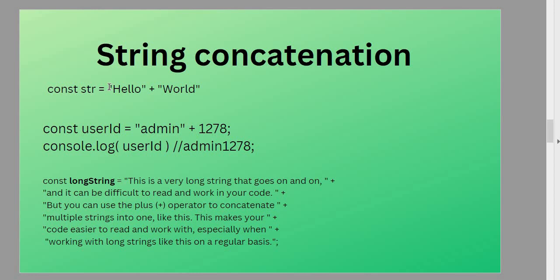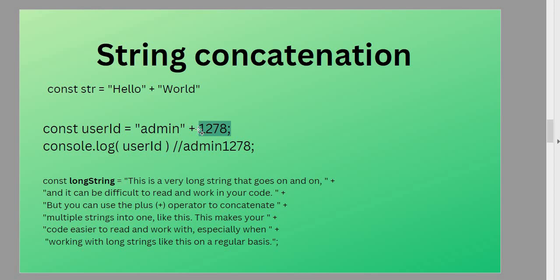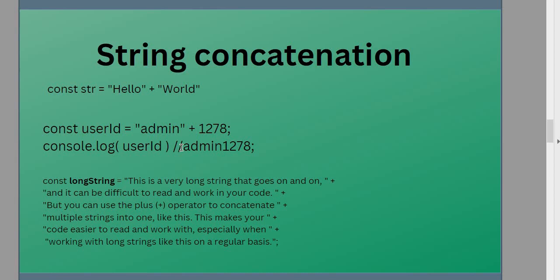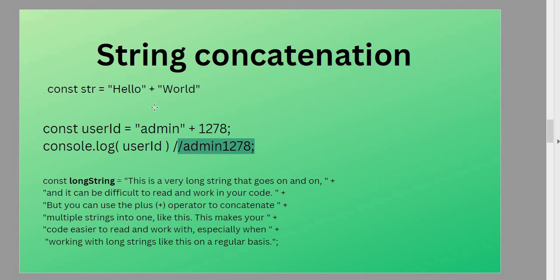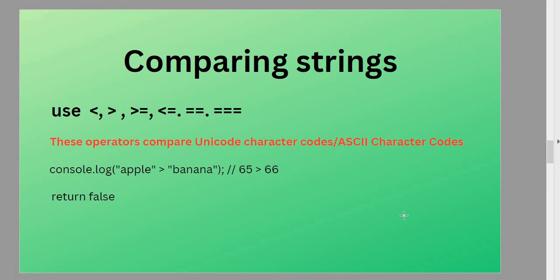Now, string concatenation — you can add two strings together, and if you log that to the console it will print 'hello world'. When you add numbers, JavaScript will treat the number as a string and convert it, so the output will also be a string. You can also use string concatenation to split long strings across multiple lines by adding the plus sign, which makes it easier for other developers to read your code. As mentioned before, you can also use template literals for this.